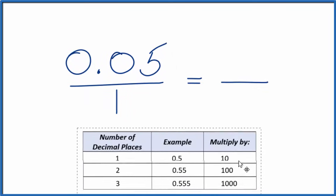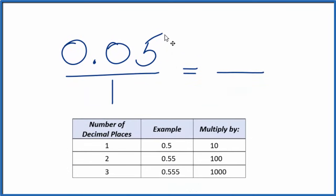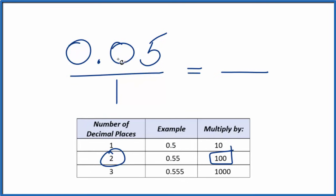What we could do, if we look at this table here, to get this to be a whole number, we have 0.05. So we have two decimal places. When we have these two decimal places, like 0.55 or 0.05, we multiply by 100.